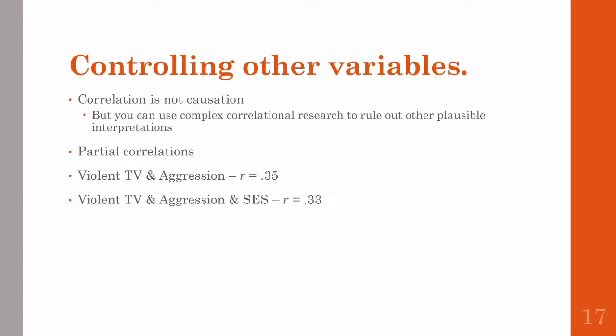Since the correlations are pretty much the same, we can say that the relationship between violent TV and aggression is largely independent of socioeconomic status. However, if the correlation dropped to something like 0.03, that would suggest that SES is the third variable really driving that relationship. So you can use other variables within this type of research to control for confounds.